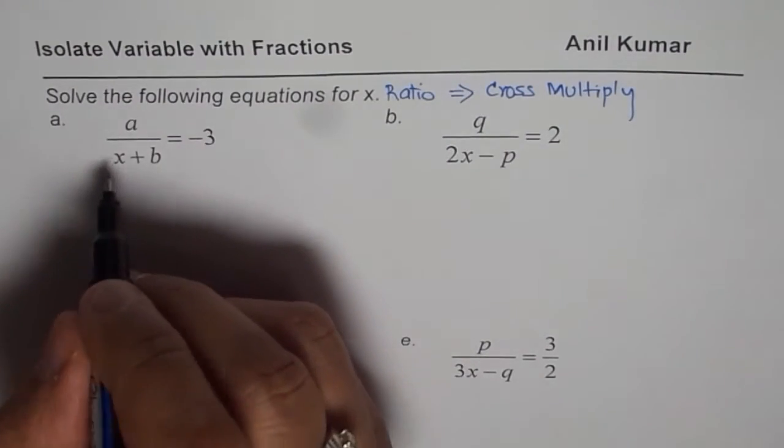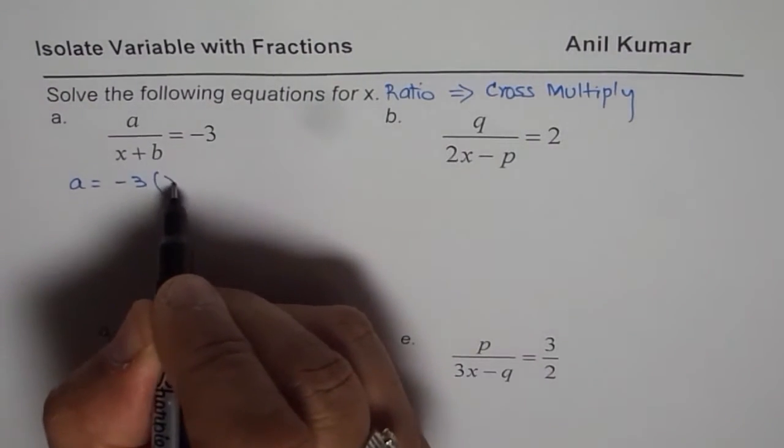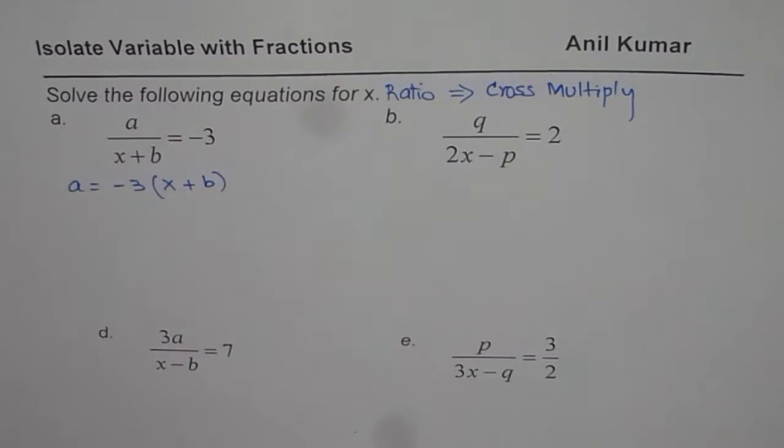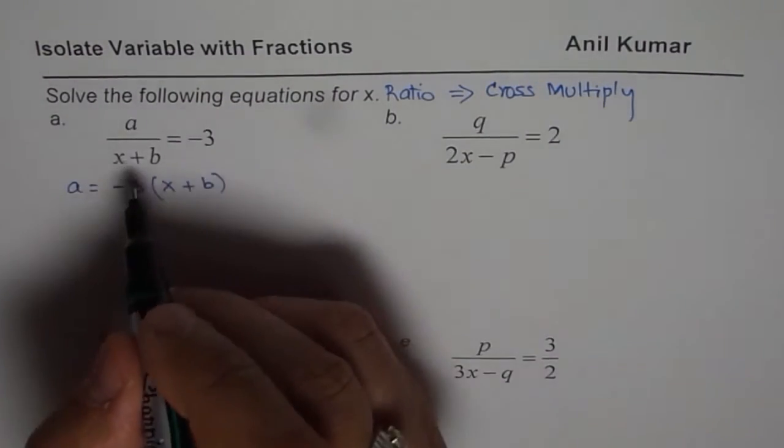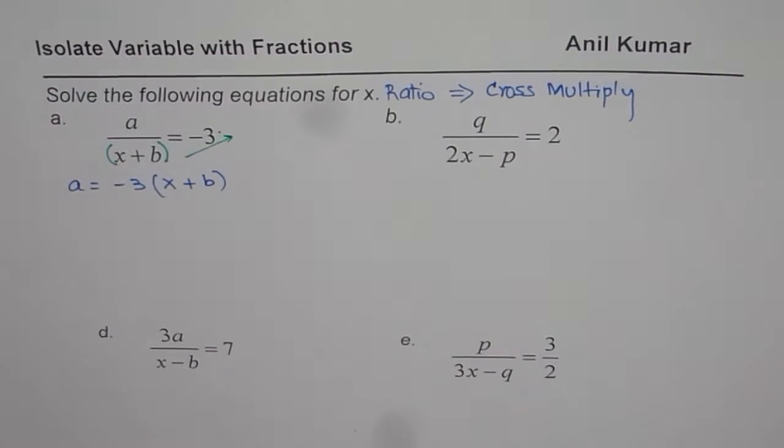We will cross multiply. That really means a is equal to minus 3 times x plus b. So basically we are multiplying this term, which is in the denominator, by minus 3 like this. So that is what you get.